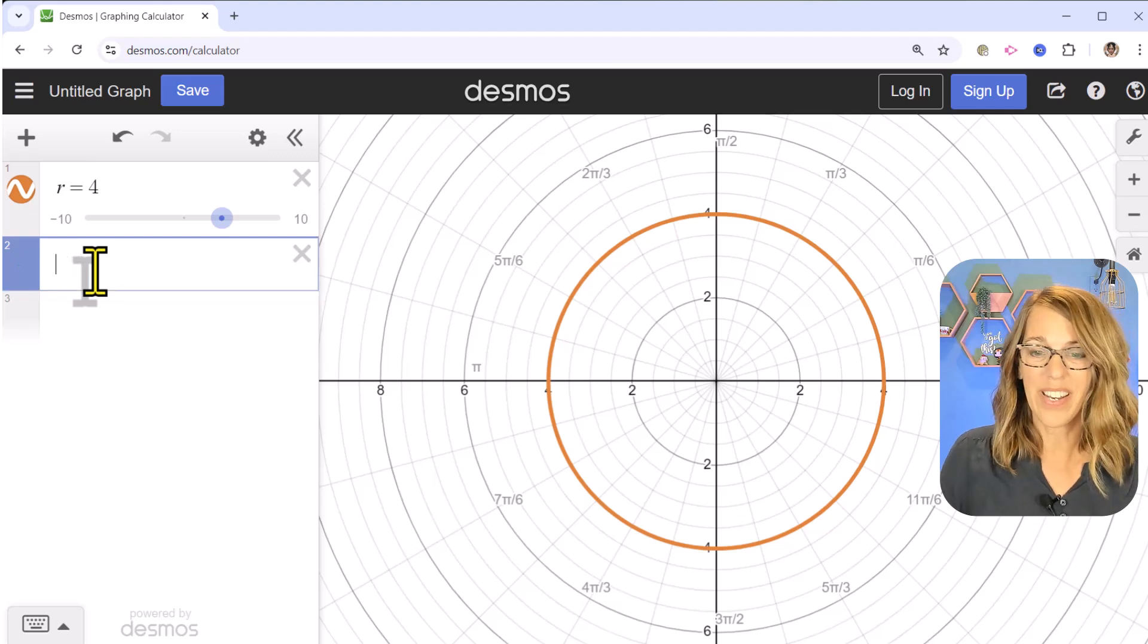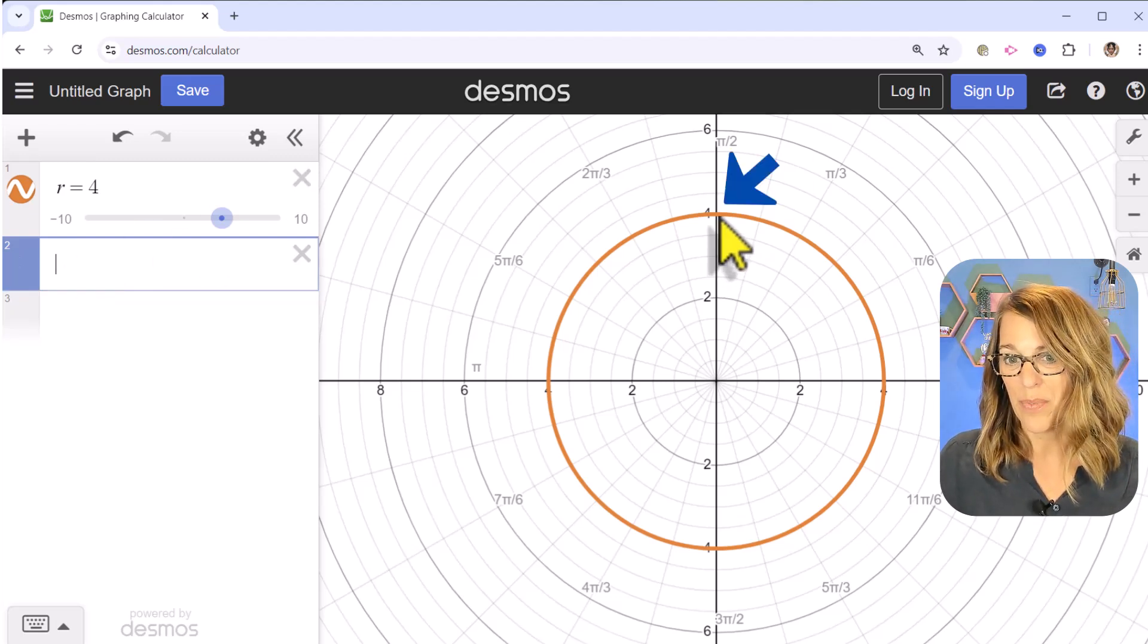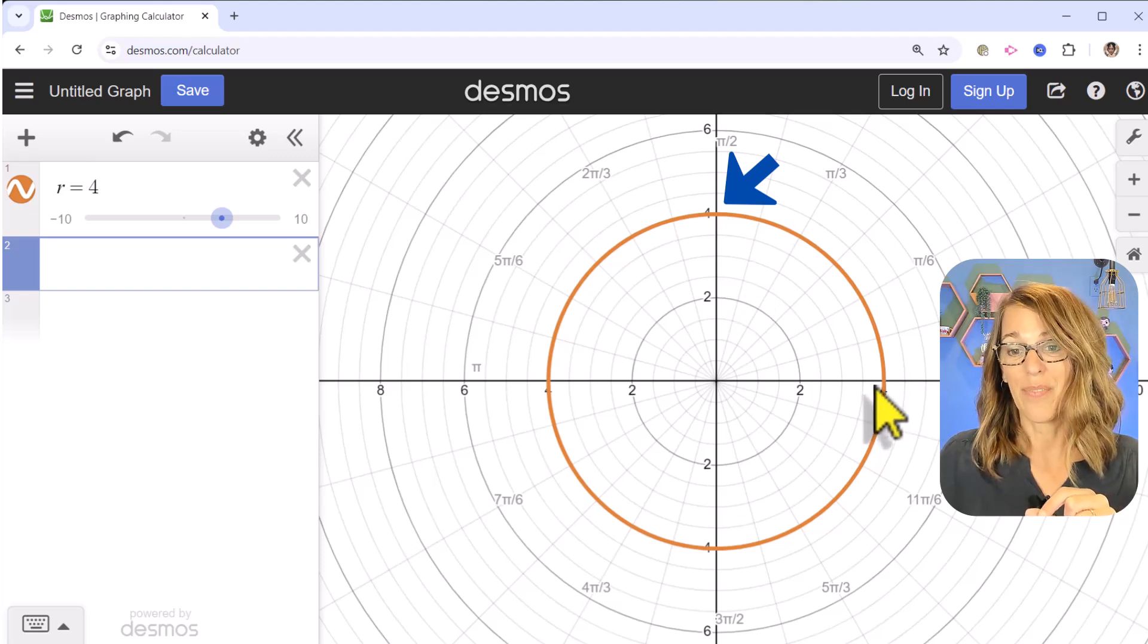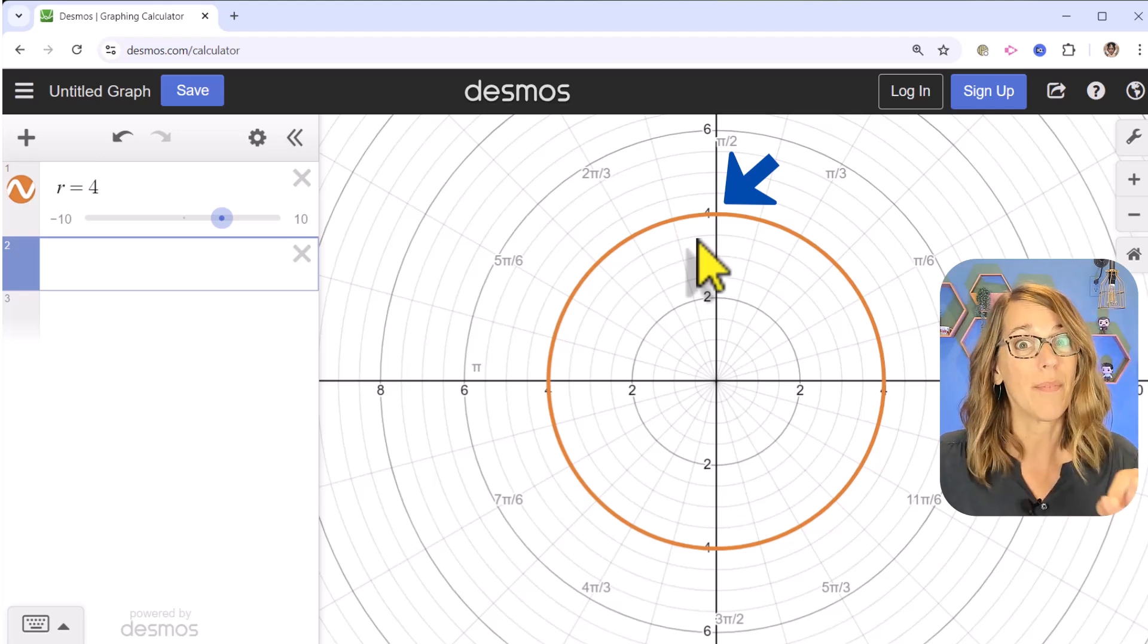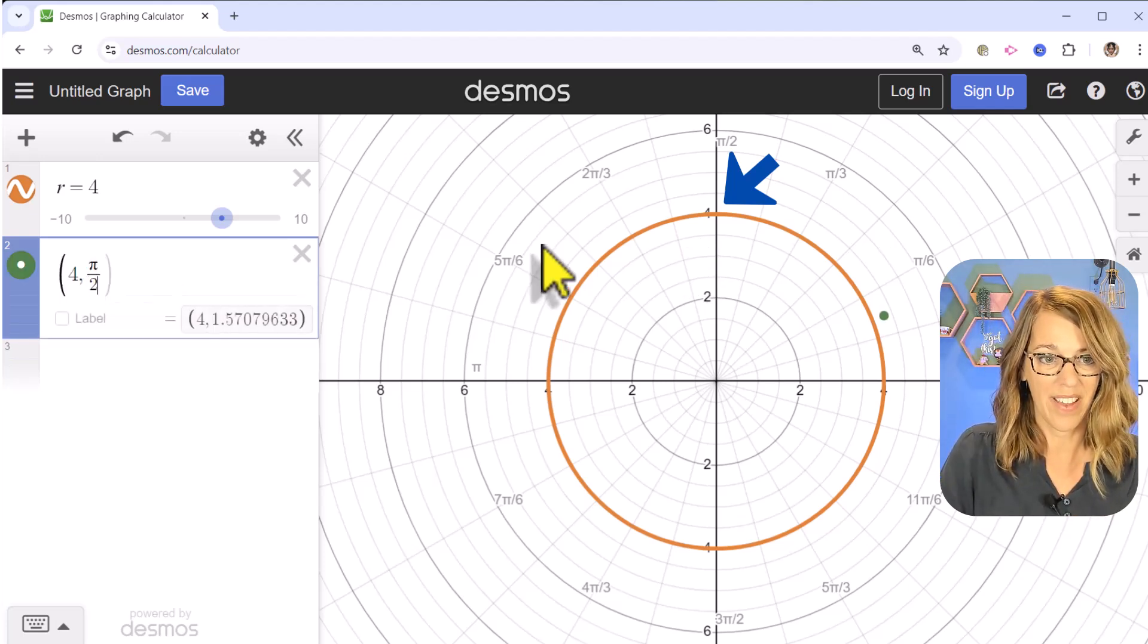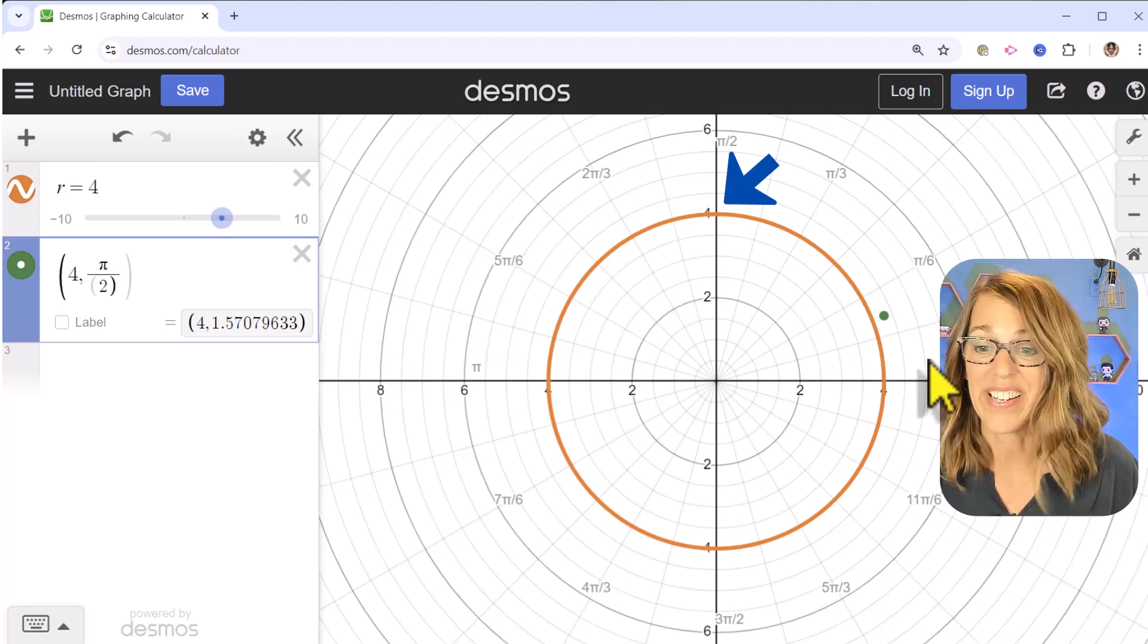Let's say that we want to get to this point right here. So this point right here would be a distance of 4 from the center, so r is equal to 4, and from the positive x-axis we have traveled π/2. So (r, theta) would be, if I do this, (4, π/2), but it gives me the wrong point.